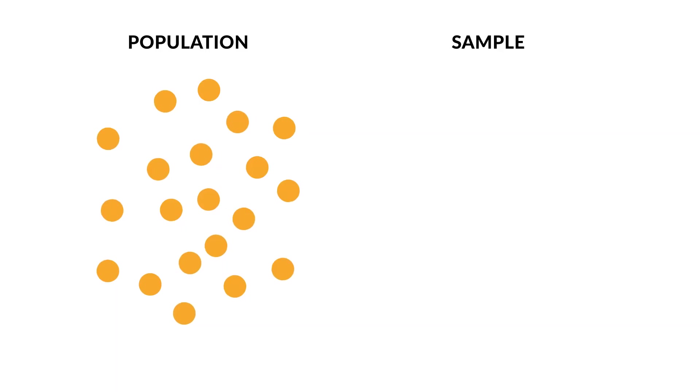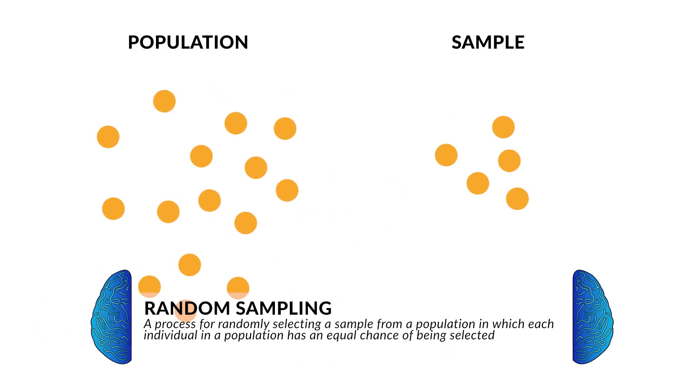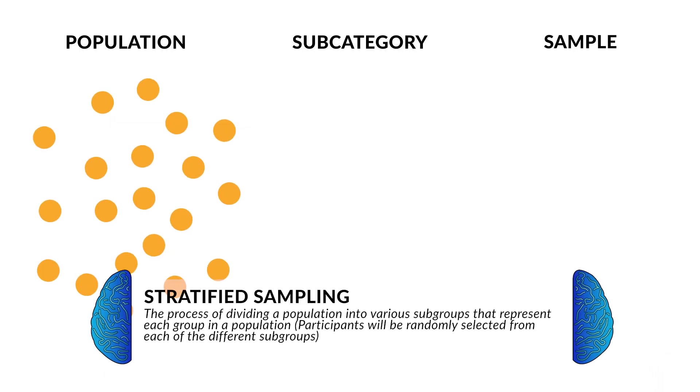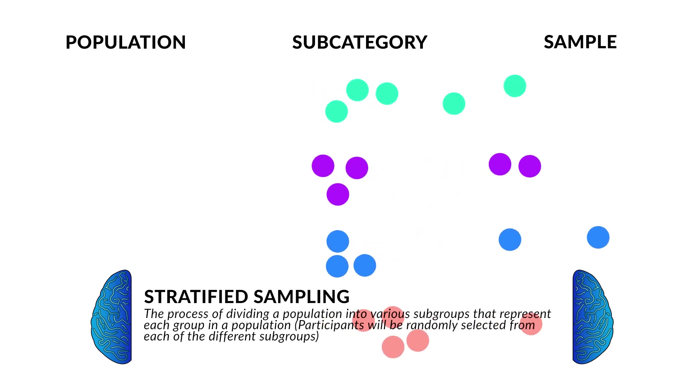When trying to select individuals from a population to create a sample group, researchers can use random sampling — this is when each individual in a population has an equal chance of participating. Researchers can also use stratified sampling, which is when they divide the population into different subcategories and randomly take a sample from each subcategory.